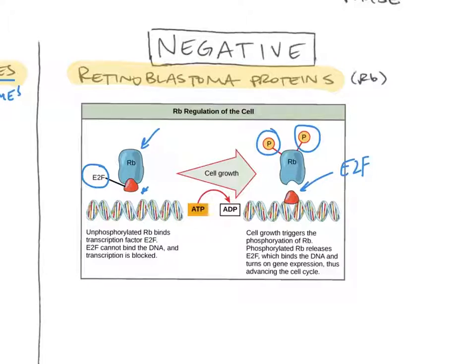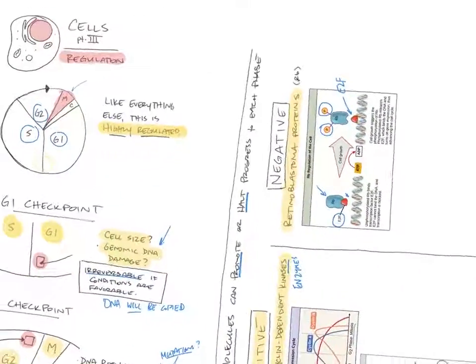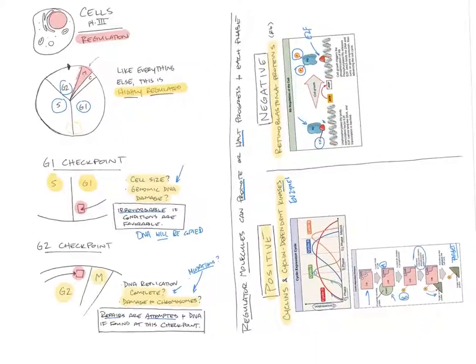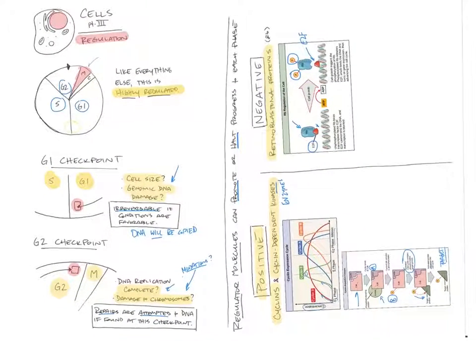So again, that was really fast. We talked a lot about those regulations. There's a lot more regulation mechanisms that are involved, but these are kind of the big ones. The G1 checkpoint between G1 and S, the G2 checkpoint before mitosis itself, and then we've got a couple mechanisms, positive and negative over here.